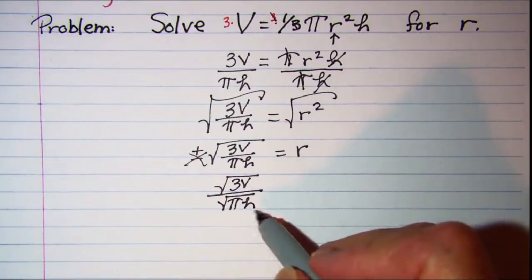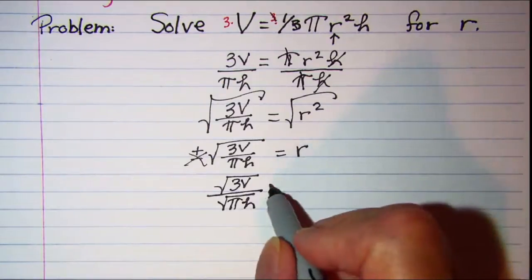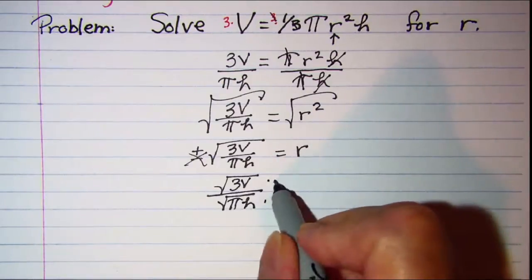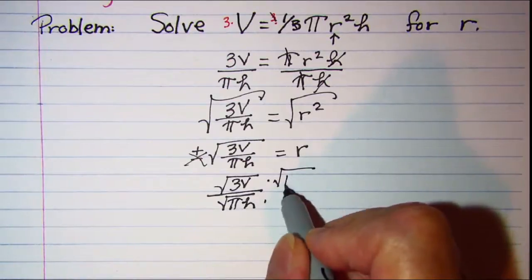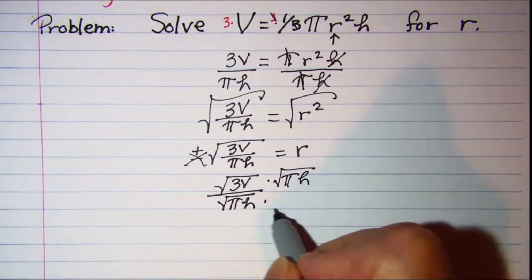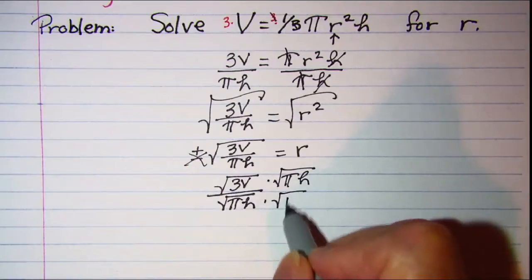In order to rationalize the denominator you multiply top and bottom by the radical. So we'll multiply by square root of pi h in the top and the bottom.